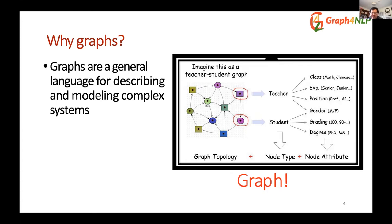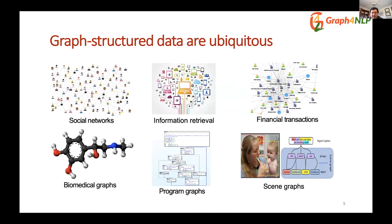Graph data is everywhere, ranging from social networks to information retrieval — modern search and recommendation systems often use graph neural networks. In the financial domain, you can formulate transaction graphs between financial institutions and customers. Graphs are also used for modeling chemical compounds, control flow and data flow graphs for program analysis, and high-level image reasoning in computer vision.